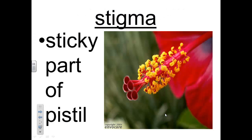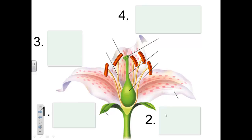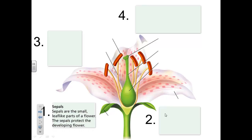The stigma is the sticky part, or the top part of the pistil. Please label this in your notes page. The sepals are the small leaf-like parts of a flower at the bottom near the stem. The sepals protect the developing flower.